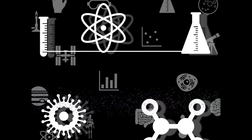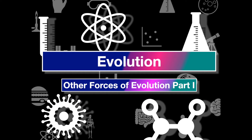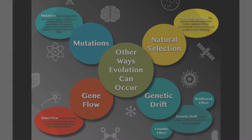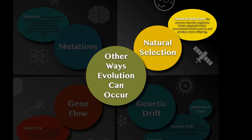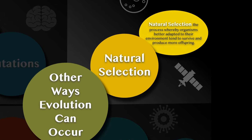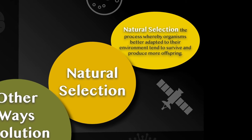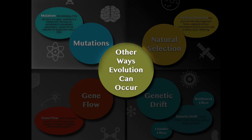This video covers other forces of evolution beyond natural selection that play a role in speciation. Natural selection is the process whereby organisms better adapt to their environment, tend to survive, and produce more offspring — survival of the fittest within a population. But there are several other ways evolution can occur.